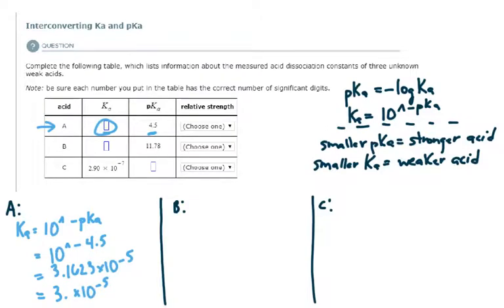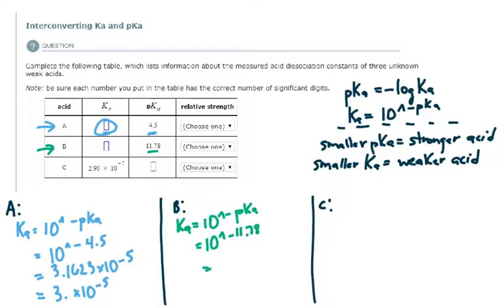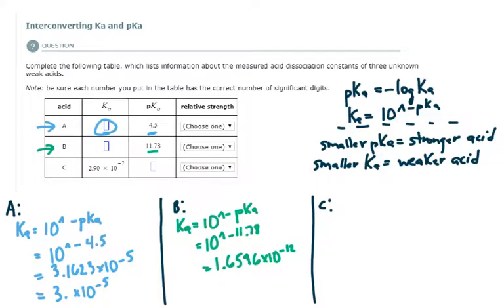For acid B, we are doing the exact same thing — given the pKa and asked to find the Ka. So the Ka is equal to 10 to the negative pKa, which is 10 to the negative 11.78. That value is very small — smaller than acid A — at 1.6596 times 10 to the minus 12. Before reporting this answer, I need to round to the correct number of significant digits. The given pKa has two decimal places, so I round to two decimal places. My final answer is 1.7 times 10 to the minus 12.